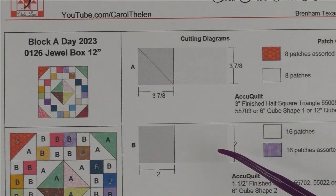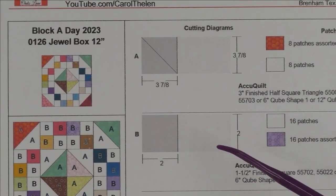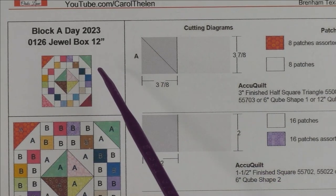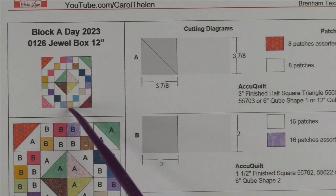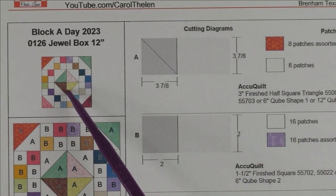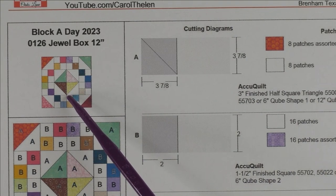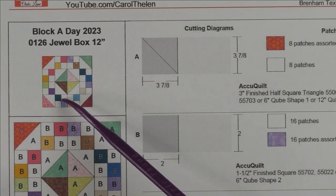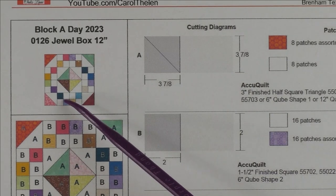This is a great block for using up all your scraps and making a scrappy quilt. It's called Jewel Box and it's 12 inches finished. I think it's called Jewel Box because originally they used a lot of jewel colors, but I think anything goes as long as it's got good contrast between the dark and the light.